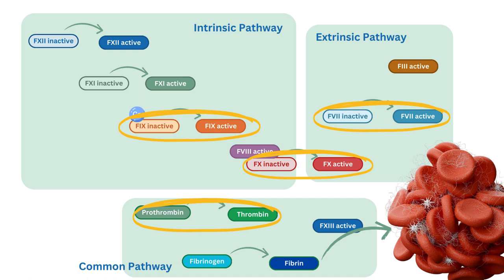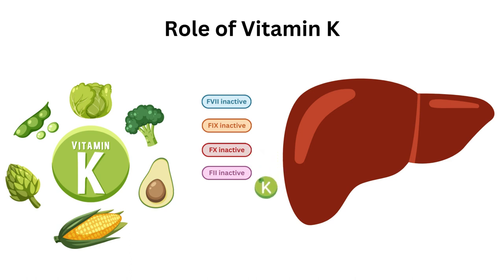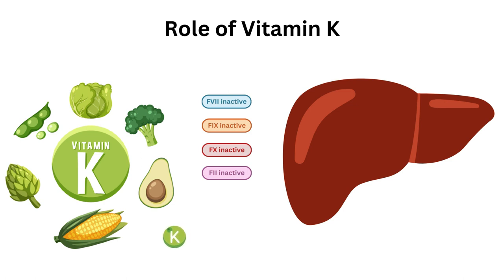These clotting factors are produced in the liver in their inactive form. Vitamin K then modifies these proteins, and these modifications are necessary for the activation of clotting factors during the clotting cascade. Without sufficient vitamin K, these clotting factors cannot be properly activated, leading to impaired blood clotting and an increased risk of bleeding disorders, such as hemorrhage or excessive bleeding.